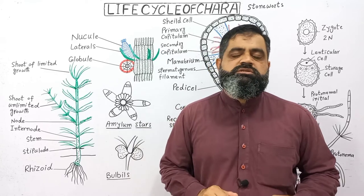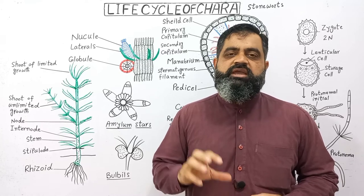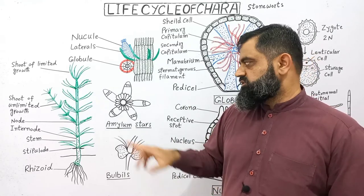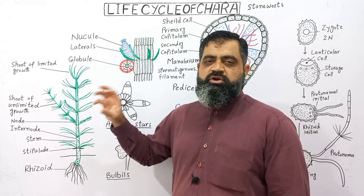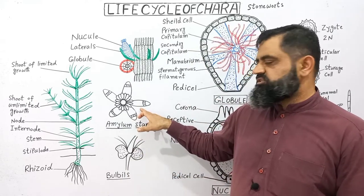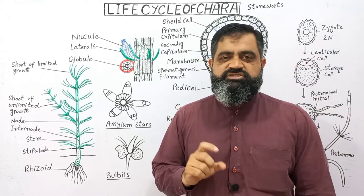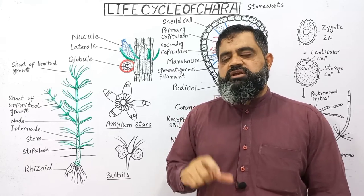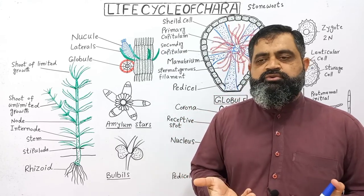Today we are going to discuss reproduction in Chara. There are two types of reproduction usually found in Chara: asexual reproduction and sexual reproduction. Asexual reproduction takes place in many ways. The first way is amylam star formation at the point of junction of the node, where branches of limited growth are emerging from the stem. This structure resembles a star and is known as the amylam star. It is filled with starch, and when it matures it falls down from the body of Chara and germinates into a new vegetative plant body.